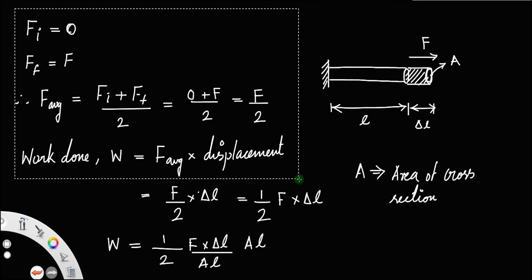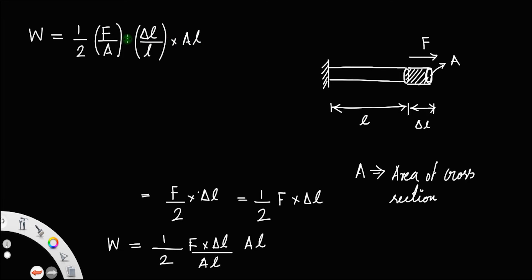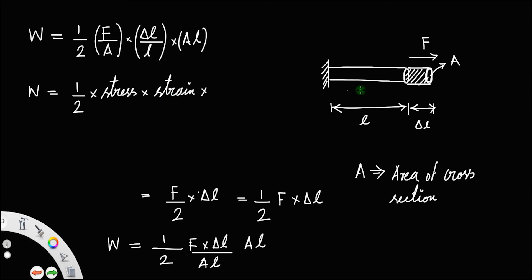Now rewrite this as W equals one half times (F by A) times (delta L by L) times (A times L). Here, force by area is equal to stress, change in length by original length equals strain, and cross-sectional area into length gives the volume of the rod. The work done to elongate the rod is stored as elastic potential energy, represented as capital U.